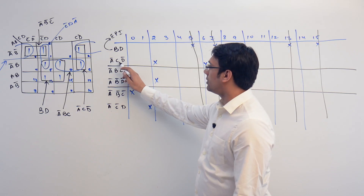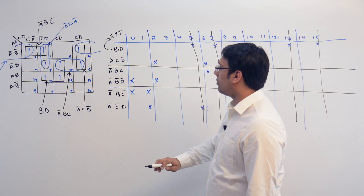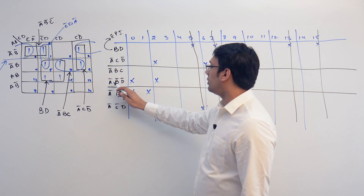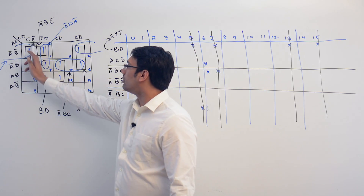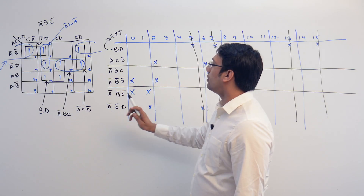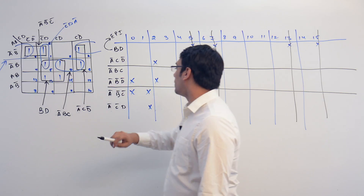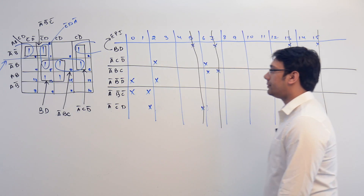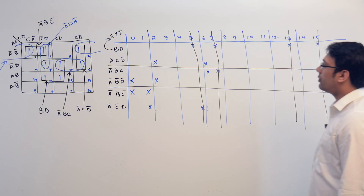Now look at the other prime implicants: we have A'CD', A'BC, A'B'D', A'B'C', and A'C'D'. Let us try to identify what can make a solution as minimum as possible.